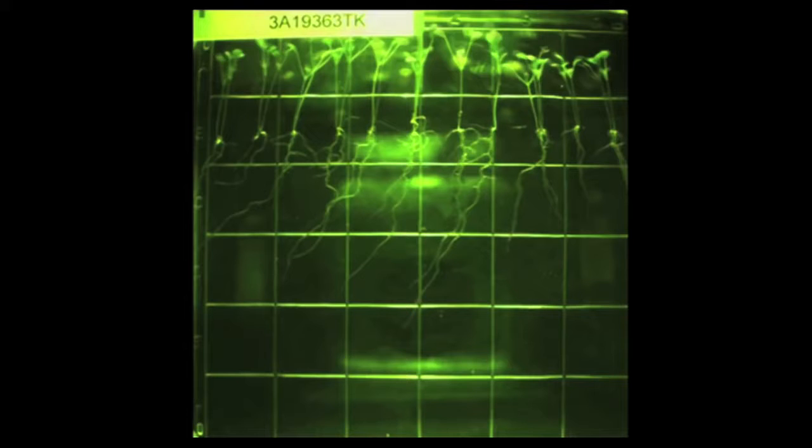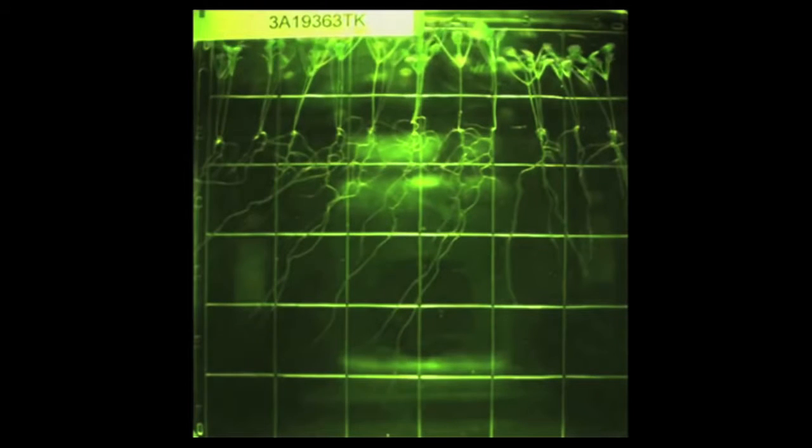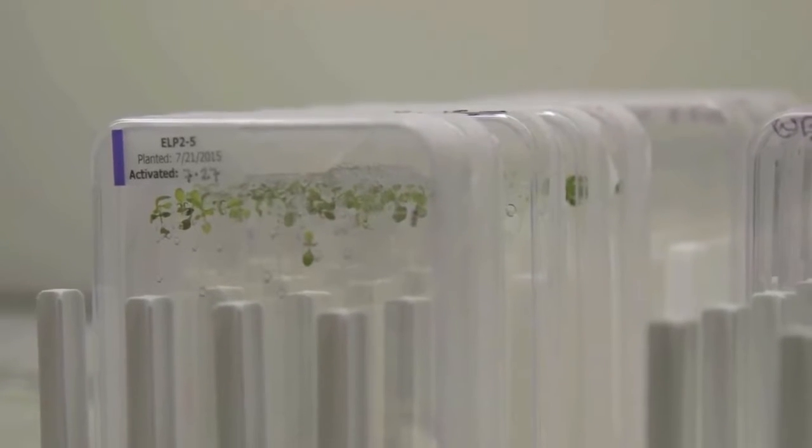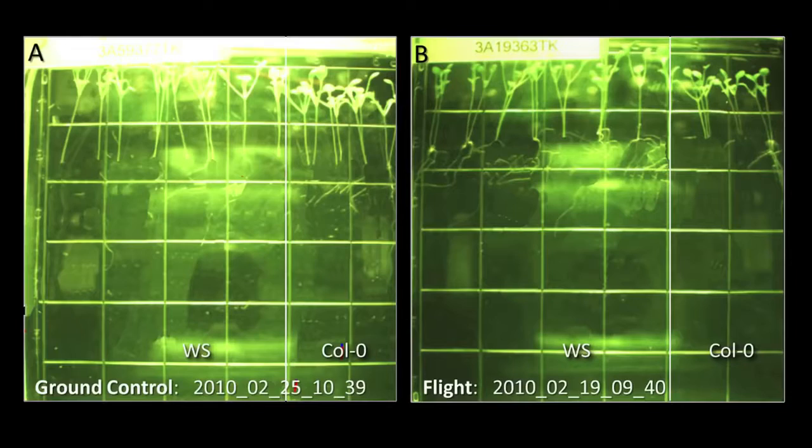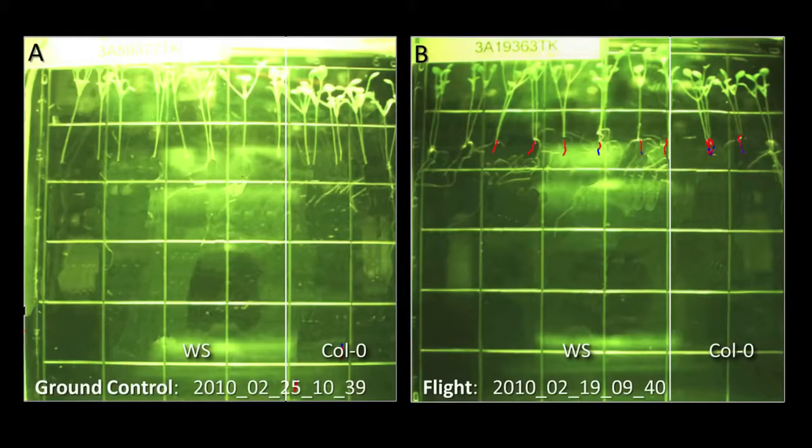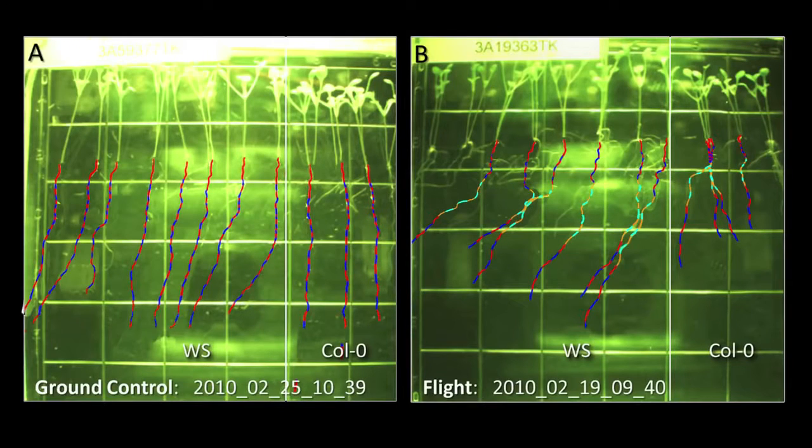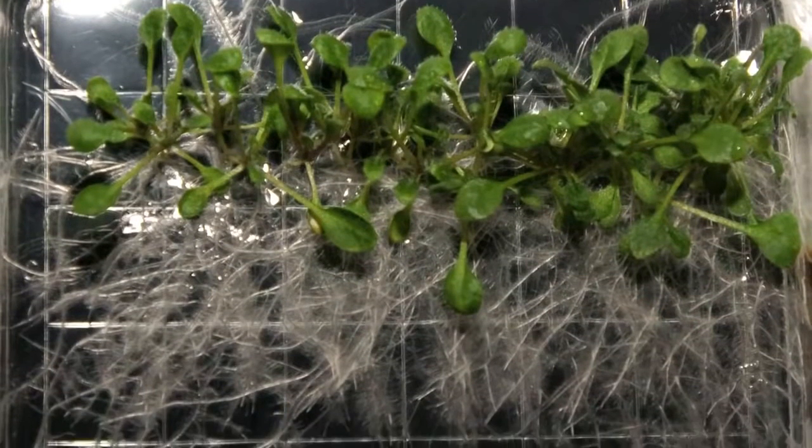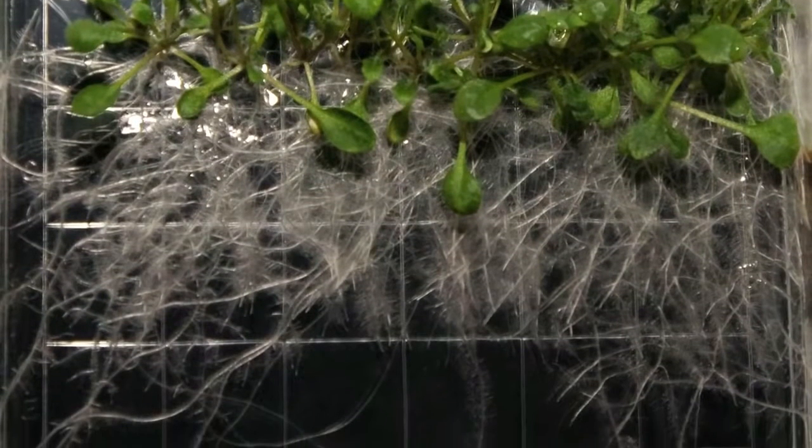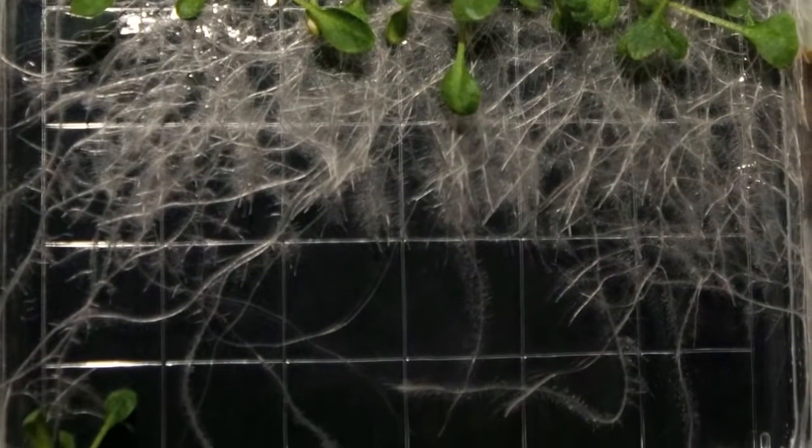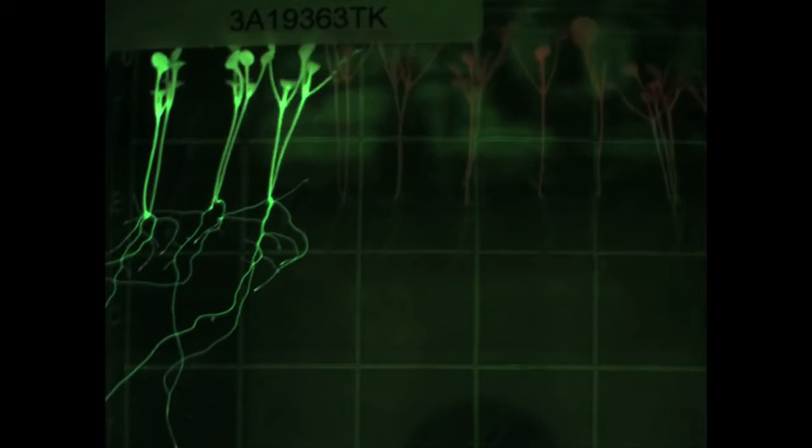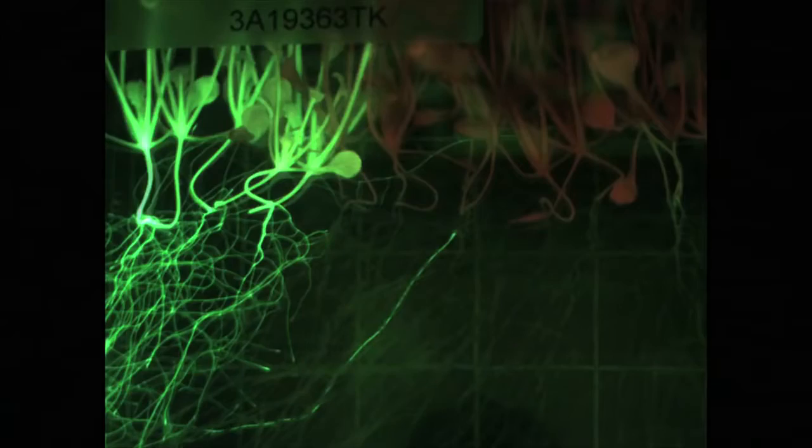At about the five-day mark, they started to do this characteristic, what we call skewing, this kind of jog to the left. Since the times of Darwin in the 1800s, it's been understood that this angled growth of roots, this skewing, was due to gravity. Instead of gravity guiding its growth, Arabidopsis used light. A closer look at the proteins involved in plant behavior revealed that 480 genes underwent significant changes during space flight.